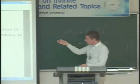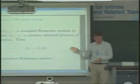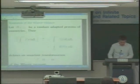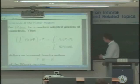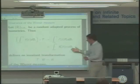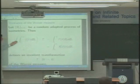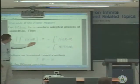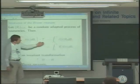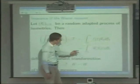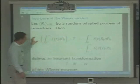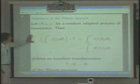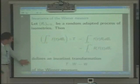Now the question I want to ask is what happens in the anticipative case. In this case, we can wonder more generally about the invariance of the Wiener measure. That means when we take a simple Wiener integral and transform it by some transformation defined in this way — we apply the rotation r to dB_t — that means by duality we can put the adjoint applied to f and integrate with respect to dB_t. When r is an adapted process of isometries, this defines an invariant transformation of the Wiener measure.